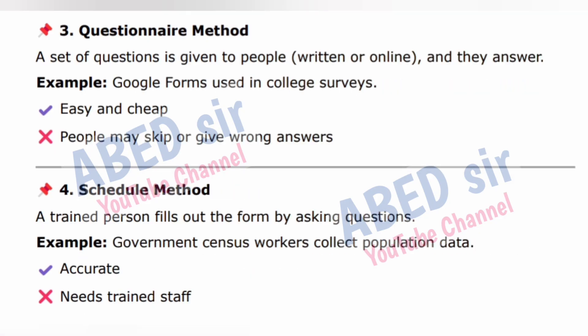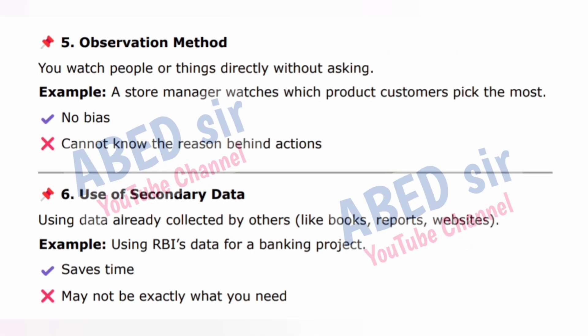Method 3: Questionnaire method — a set of questions is given to people, written or online, and they answer. Example: Google Forms used in college surveys. Easy and cheap, but people may skip or give wrong answers. Method 4: Schedule method — a trained person fills out the form by asking questions. Example: Government census workers collect population data. Accurate but needs trained staff. Method 5: Observation method — you watch people or things directly without asking. Example: A store manager watches which product customers pick the most. No bias, but cannot know the reason behind actions. Method 6: Use of secondary data — using data already collected by others, like books, reports, websites. Example: Using RBI's data for a banking project. Saves time but may not be exactly what you need.